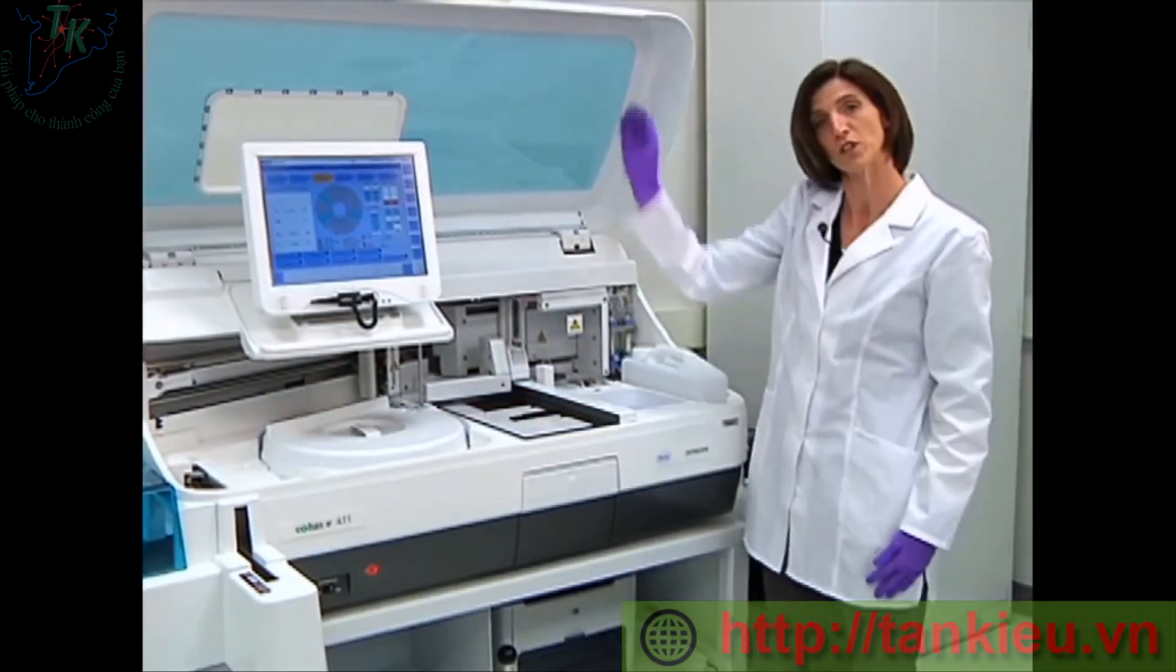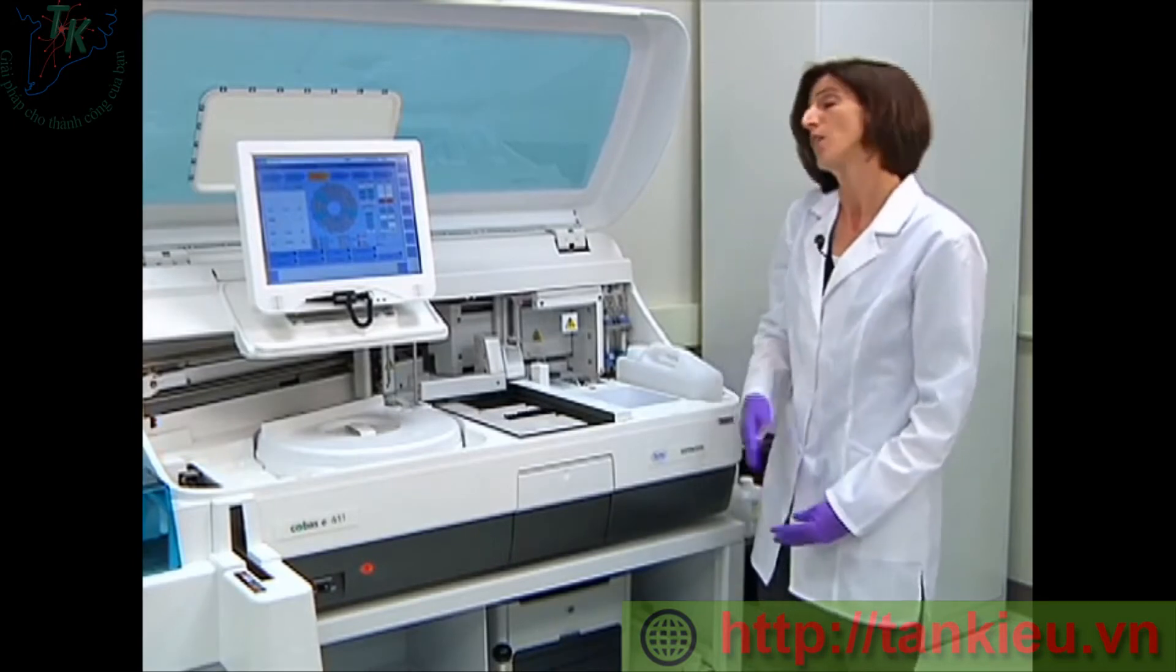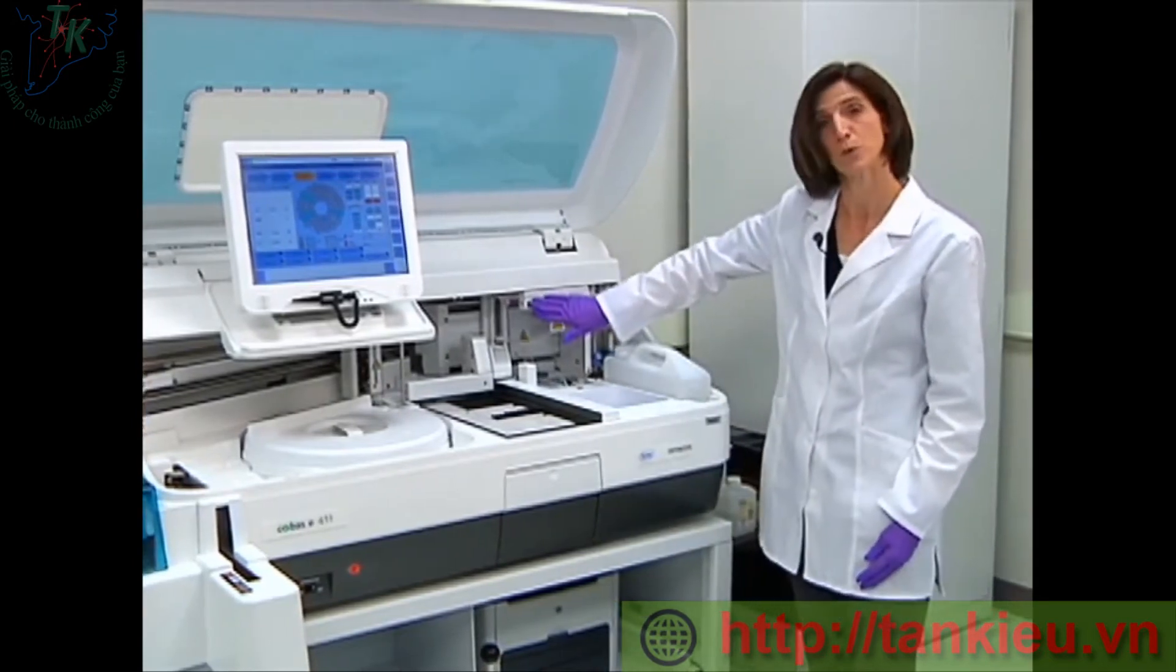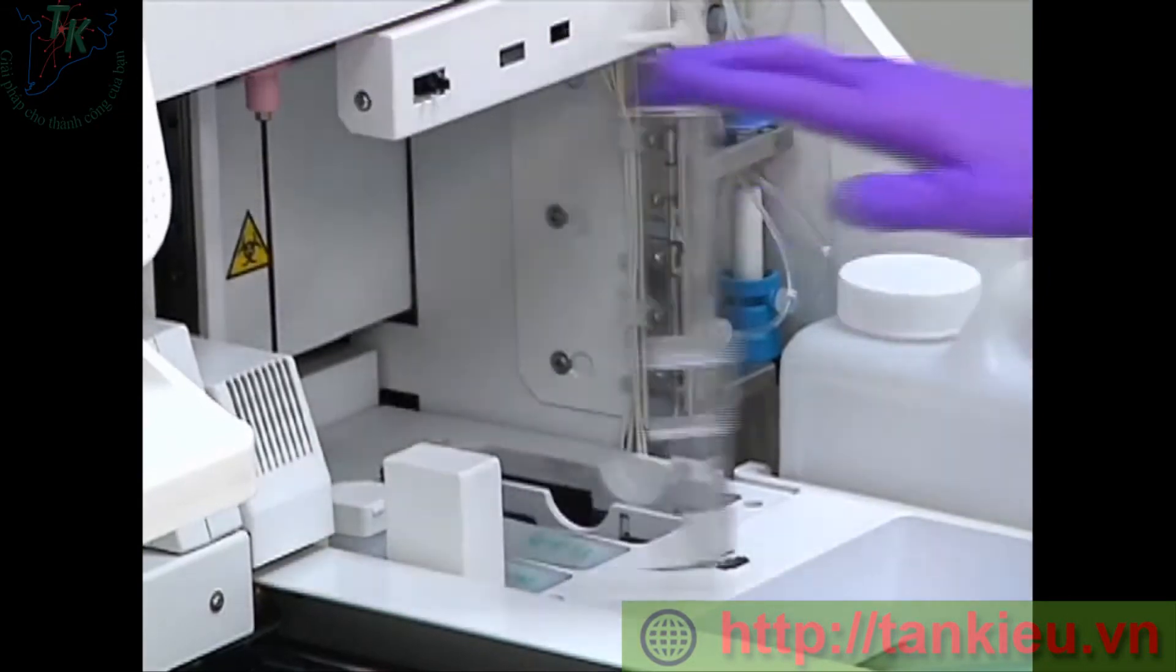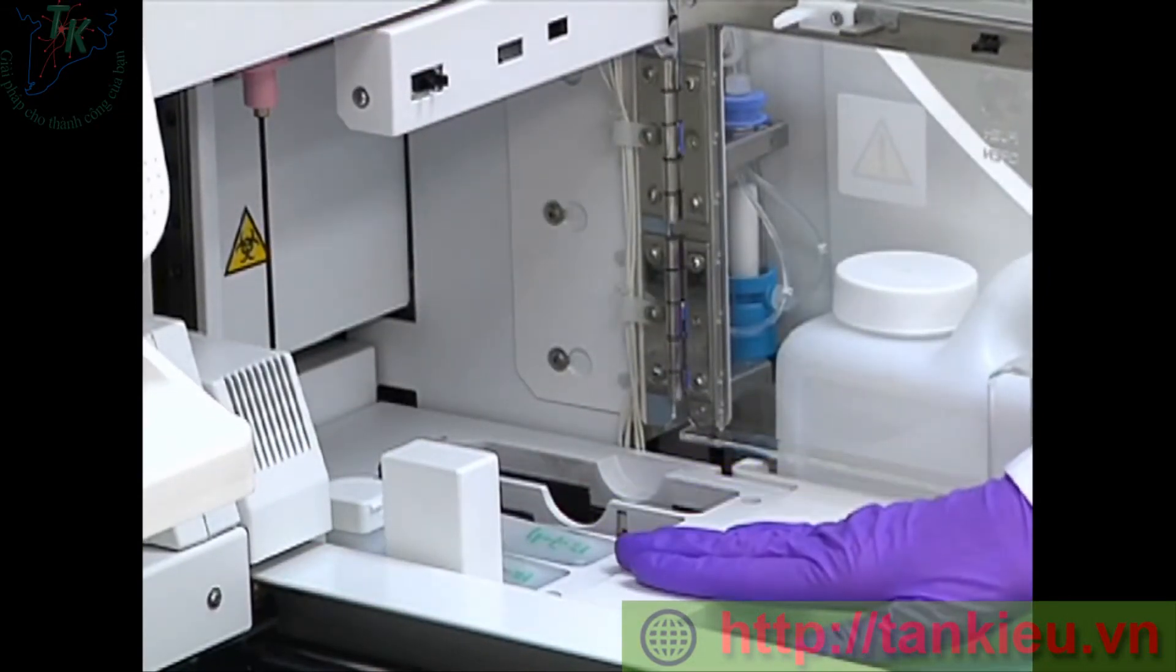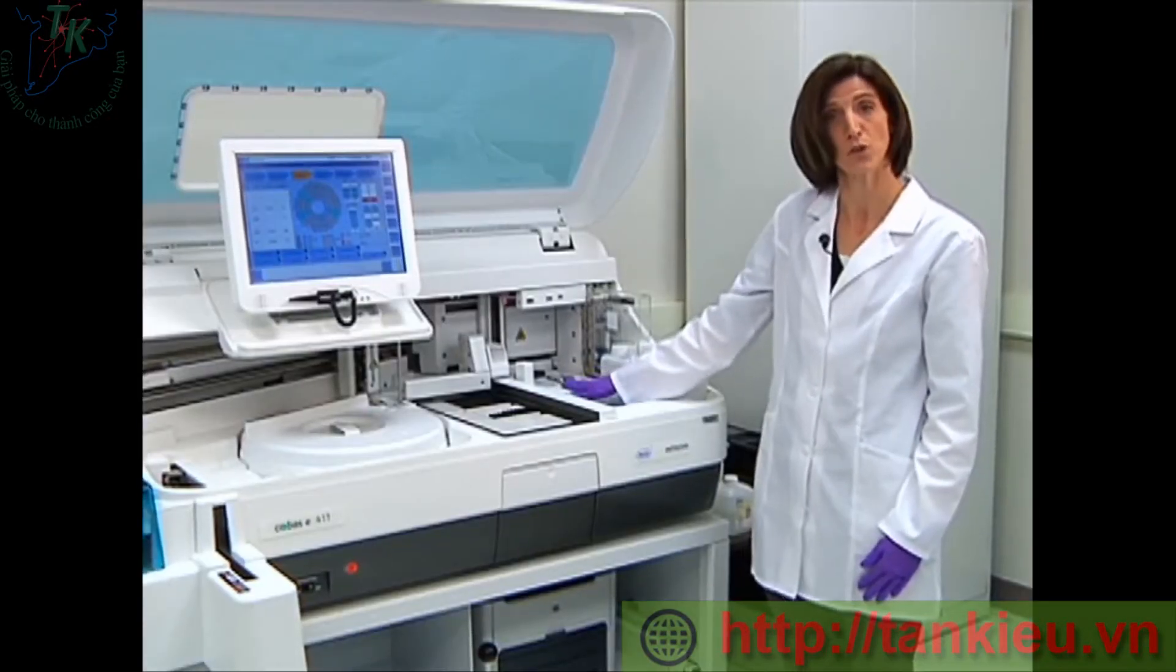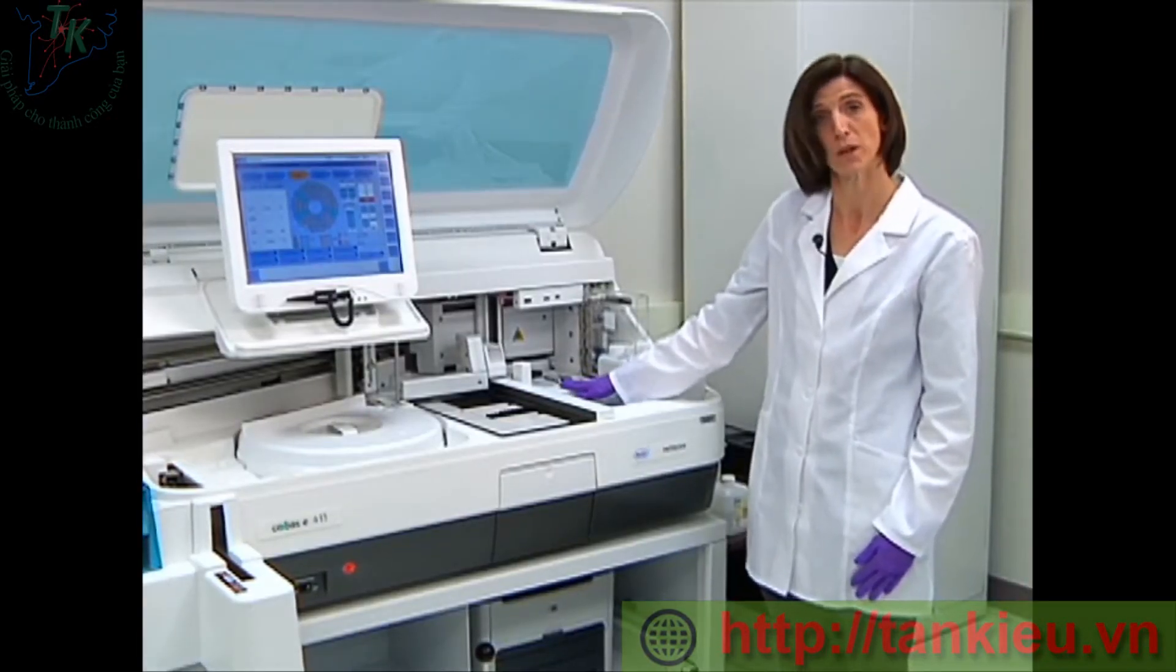The first thing that we're going to load are the system reagents, which are called ProCell and CleanCell. Those reagents are found behind the zipper shield, so we need to open that. And you can see that there can be two sets of ProCell and CleanCell on board. It depends on your lab's volume whether you have two sets on board or maybe just one set.